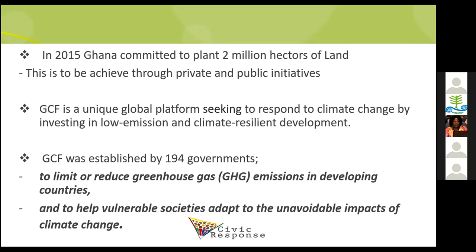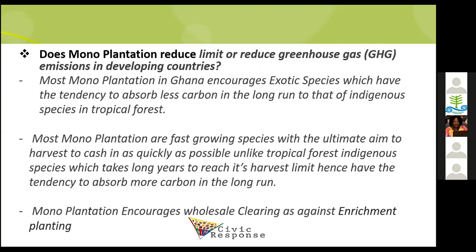Ghana's AFR100 commitment was supposed to be achieved through private and public initiatives. One of the main sources of funding has been the Green Climate Fund. The GCF was established by 194 governments and seeks to limit or reduce greenhouse gas emissions in developing countries and help vulnerable societies adapt to the unavoidable impacts of climate change. Based on experience in Ghana, I tried to see how mono plantations align — or don't align — with these objectives.